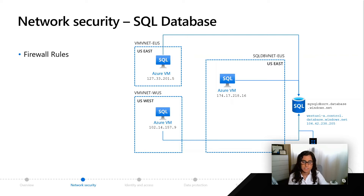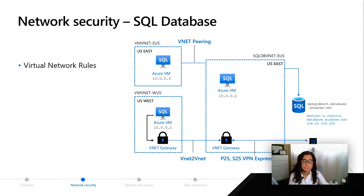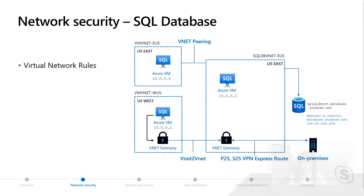On the right you can see the DNS hierarchy — the region, sometimes the control ring, and an IP address. The next level of security, which also helps from a management perspective, is virtual network rules.